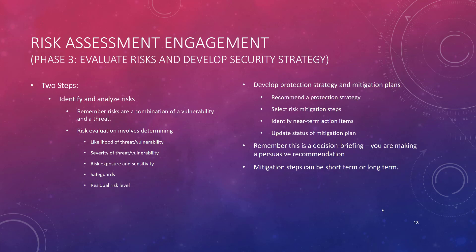We're in Phase 3 now, evaluating the risk and developing our security strategy. Two parts to this: first, identifying and analyzing those risks that are out there. A risk is a combination of a vulnerability and a threat — you've got to have both. We're going to look at likelihood, severity, exposure, and sensitivity, then what controls or safeguards we can put into place and what residual risk results. That then leads to a protection strategy and some mitigation plans.